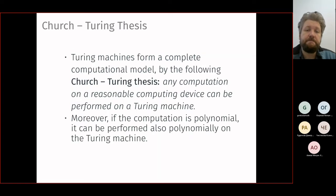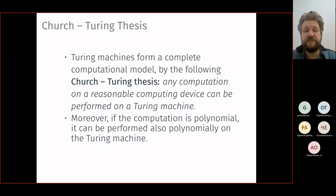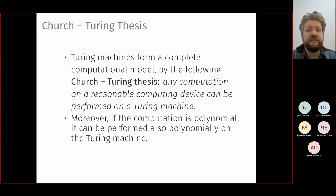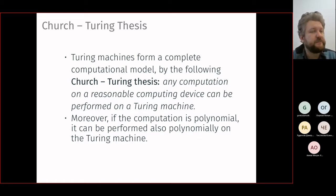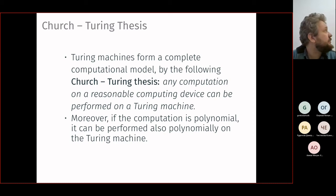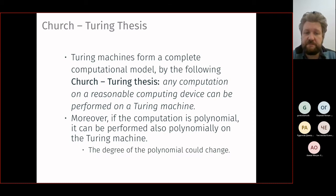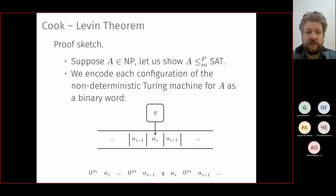The Church-Turing thesis states that any computation on a reasonable computing device can be performed on a Turing machine. This is a complete model of computation — any program can be reprogrammed in it. It's a very restrictive model but can simulate anything, and it preserves polynomiality. The degree of the polynomial may change, but polynomiality itself is preserved. Now we return to Cook-Levin.